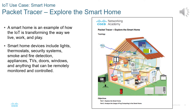A smart home is an example of how the IoT is transforming the way we live, work, and play. Smart home devices include anything that can be remotely monitored and controlled. Its security measures include strong authentication, software upgrades, WPA2, and encryption.